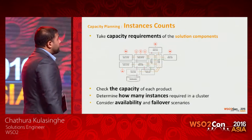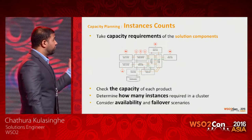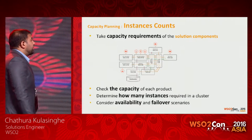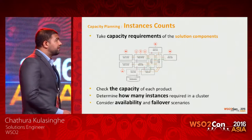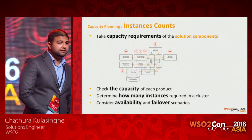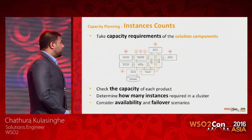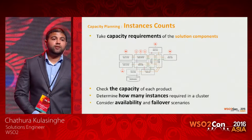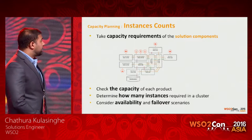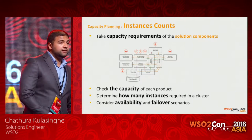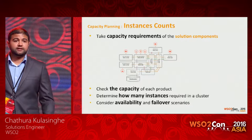First, you need to determine the capacity requirements for your solution. Then you check the capacity of each product, since WSO2 performs tests to determine the capacity of the latest version of each product. Based on those two values, you can determine how many instances each product cluster requires. You also need to consider how to handle high availability and failover situations when determining instance count and deployment.